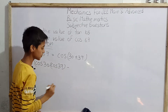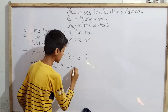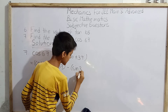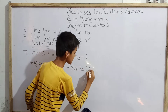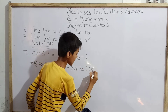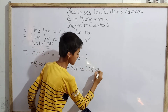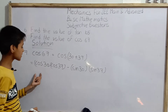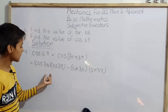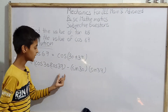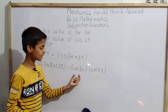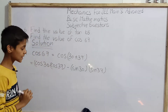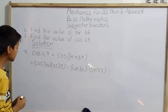Continuing: minus sin 30° times sin 37°. So we have cos 30° · cos 37° − sin 30° · sin 37°, and now we need to evaluate this.